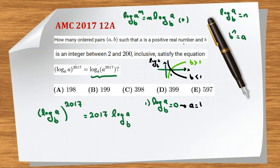So a has to be 1, which is a positive real number. And b is an integer between 2 and 200, so b can be 2, 3, up to 200. How many answers are there? From 2 to 200, that's 199. That's our first case.